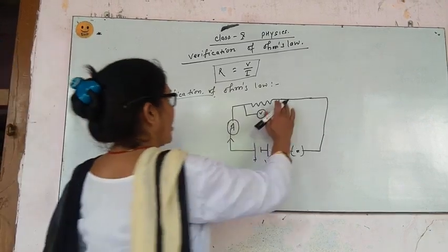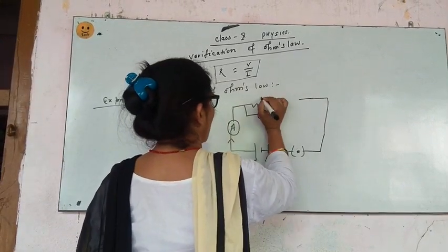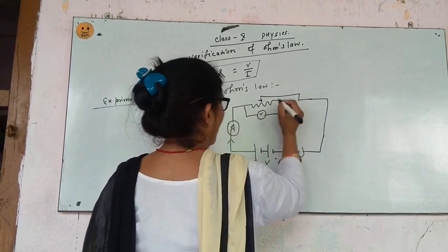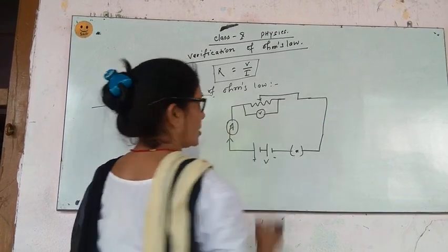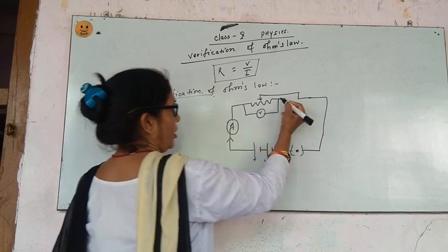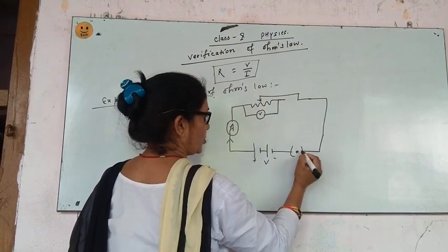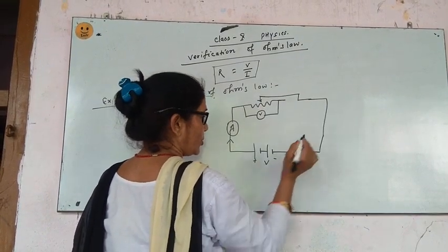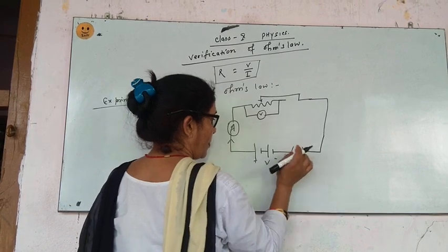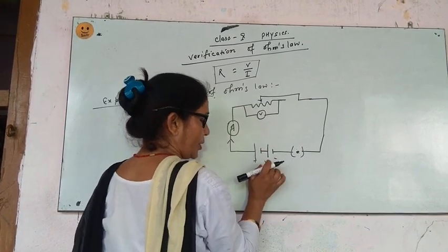In this experiment, we use a variable resistance — that is, a variable resistor. In the resistor, one end is free and one end is connected to the plug key and then to the source of current.